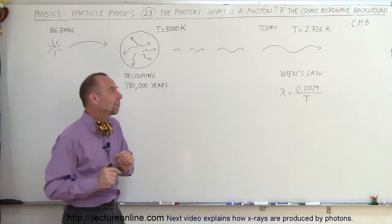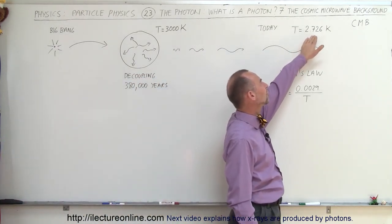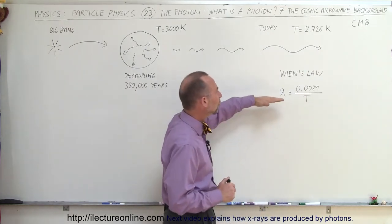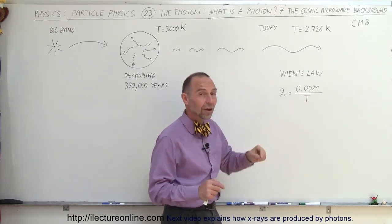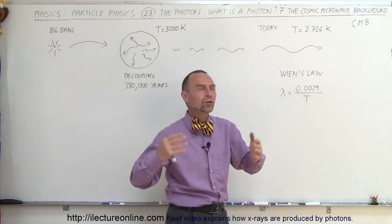The photons have a specific wavelength, and that wavelength corresponds to the temperature of 2.726 degrees Kelvin, which is the current temperature of the universe. So if we use Wien's Law, we can actually figure out the wavelength of that radiation, and it's extremely uniform all throughout the universe.